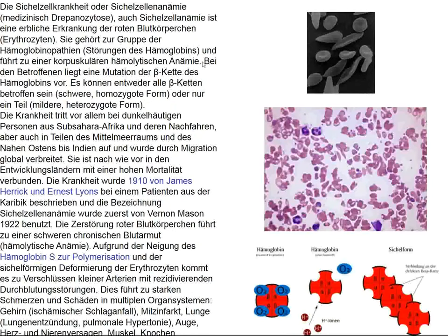Sickle cell anemia affects patients homozygous for hemoglobin S. Heterozygous patients have relative resistance to malaria, but if they are homozygous for hemoglobin S and their hemoglobin is not saturated with oxygen, they form these polymers as shown here. The problem is a substitution in the beta chain where glutamine is exchanged for valine, enabling these polymers to form when hemoglobin isn't saturated. As medical students, we got cells to sickle by putting a coverslip on with a layer of petrolatum, waiting about 20 minutes until cells became ischemic, and then they would all sickle as shown in this peripheral smear.